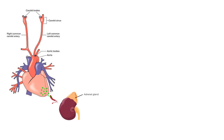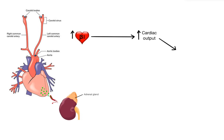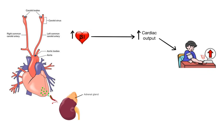Activation of beta-1 receptors causes increase in heart rate and stroke volume and thus increased cardiac output which leads to increase in blood pressure. On the other hand, activation of alpha-1 receptors on smooth muscle causes vasoconstriction and thus increase in vascular resistance, which again leads to increase in blood pressure.